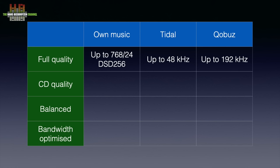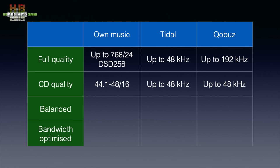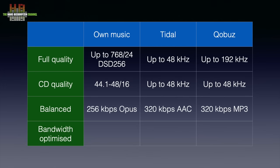MQA tracks are not unfolded and thus at best send 1FS files — 44.1 or 48 kHz 16-bit. If less bandwidth is available or budget restricted, you can choose 44.1 and 48 kHz 16-bit for all tracks — so full CD quality. If even less bandwidth is available, which can be the case with 4G and 3G cell services, your own music is sent to your phone using 256 kbps Opus, which is a better lossy compression codec, about comparable with AAC 256.